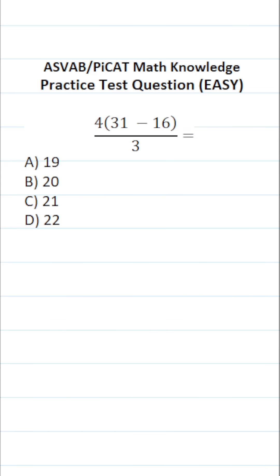This math knowledge practice test question for the ASVAB and PiCAT says 4 times 31 minus 16 divided by 3 equals. On the actual ASVAB and PiCAT, you're not given a calculator or a reference sheet, so I'd recommend that you get in the habit of copying these down and working them out on your own scratch paper.